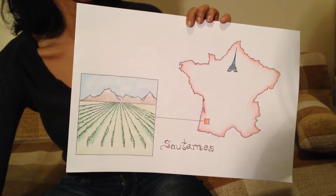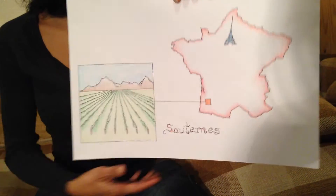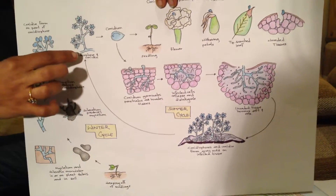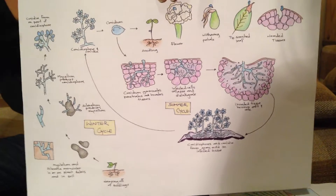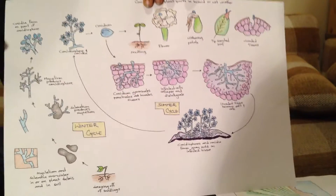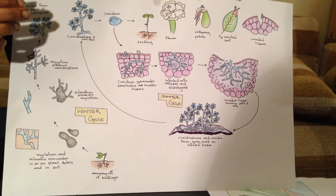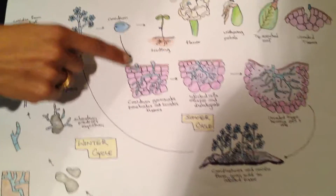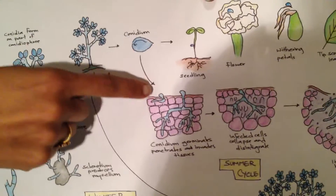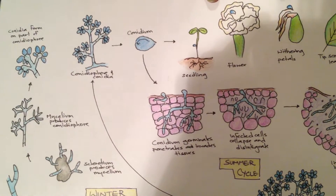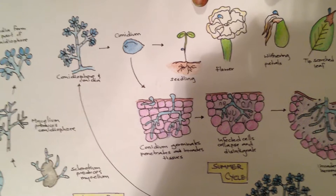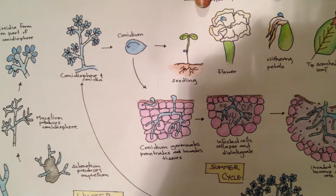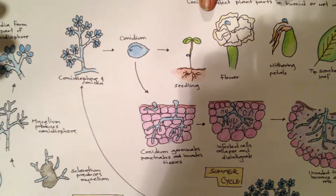Essentially what happens is the Botrytis enters the grape — it can land on different parts of the plant and enter through wounds. But it also has an appressorium, which once the conidia have landed on the plant, the appressorium can break through and push its way into the cells, form a haustorium and start getting the nutrients, sugars, and water out of the actual berry.